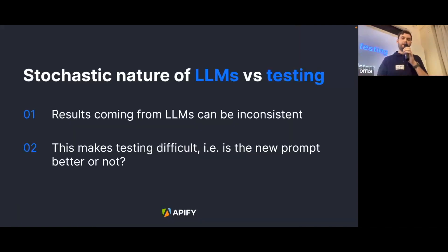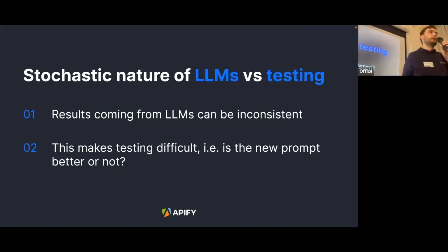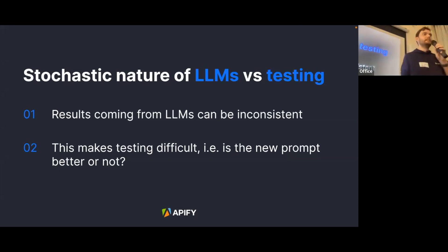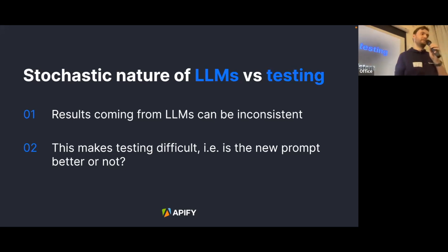Another challenge is the stochastic nature of LLMs. The outputs are quite inconsistent — for the same prompt, something completely different may happen. You're sitting there asking why, but the LLM is a black box so you don't know. This makes testing difficult: is the new prompt better or not?